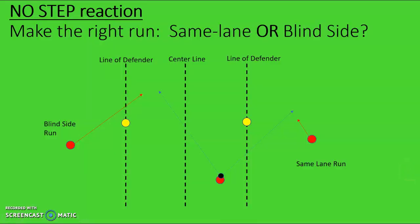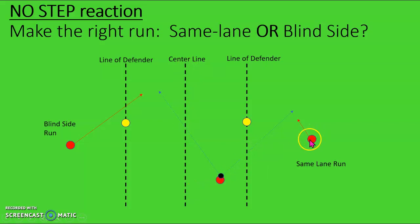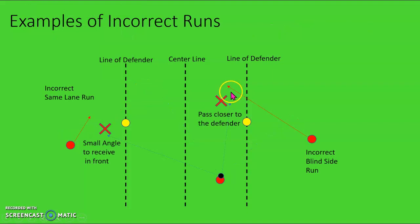Finally, what if no one steps up and all of the defenders are just retreating towards their goal? Often this will happen if they're overloaded — a 3v2 or 4v3. It's all about timing the run and making the correct choice. If the ball is near you, it's correct to want the ball to feed in the same lane. If it's ball far, the blindside run will work. Here's an example of making the wrong choice: if it's ball near and the guy tries to run blindside, the through ball won't work because it's close to the defender.